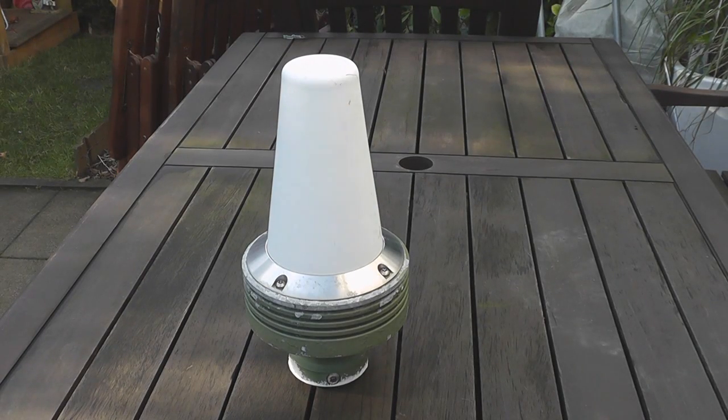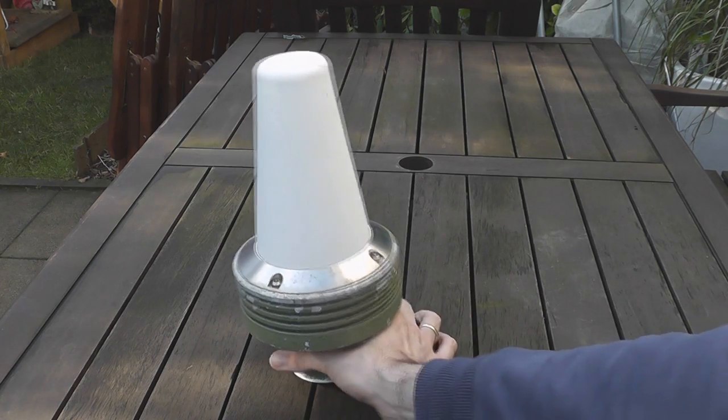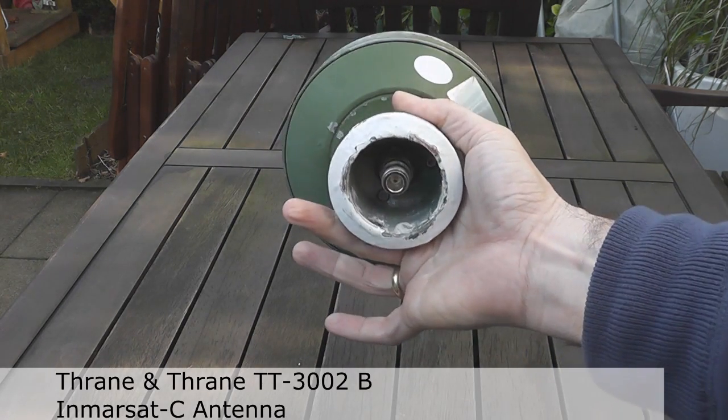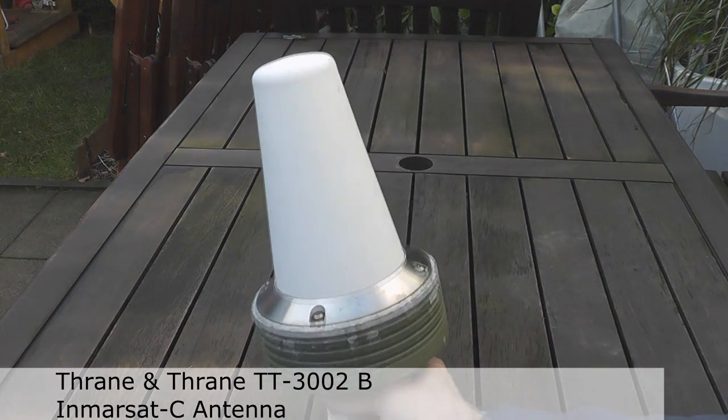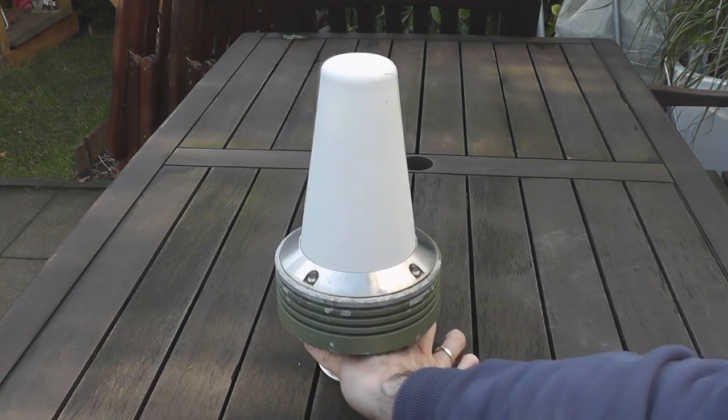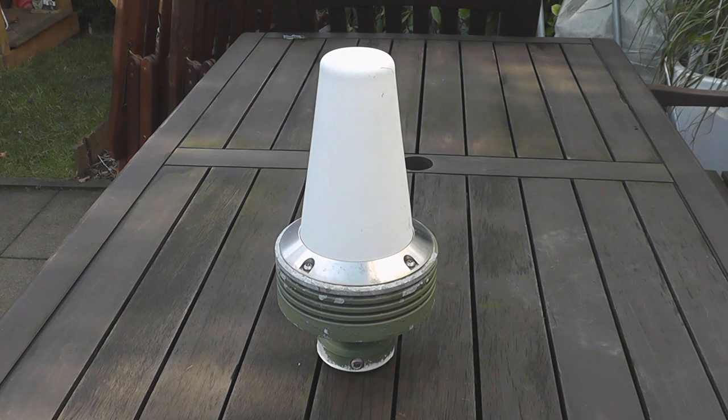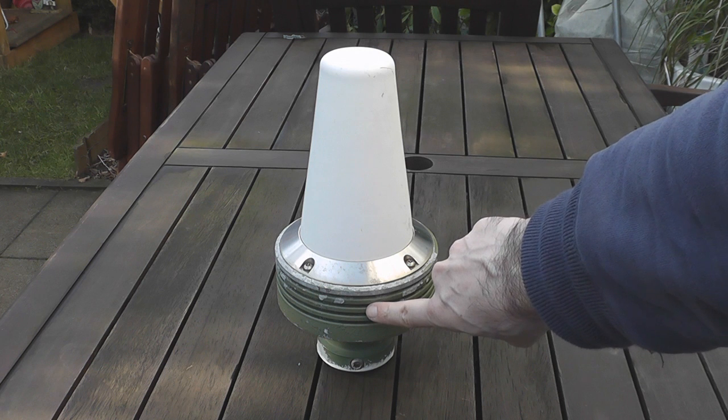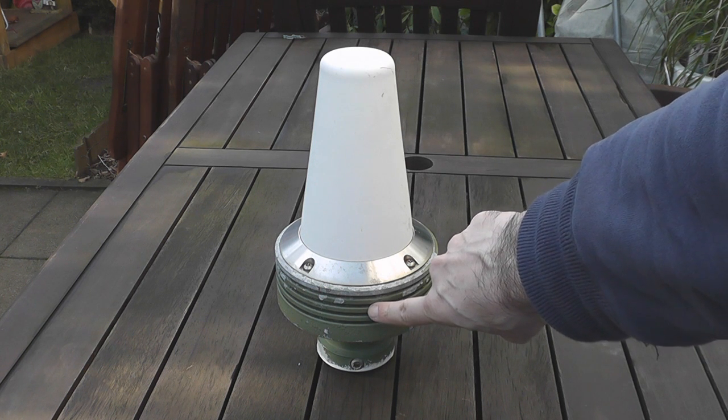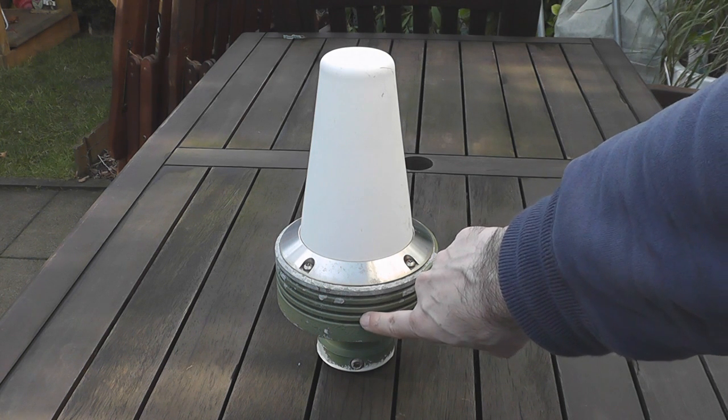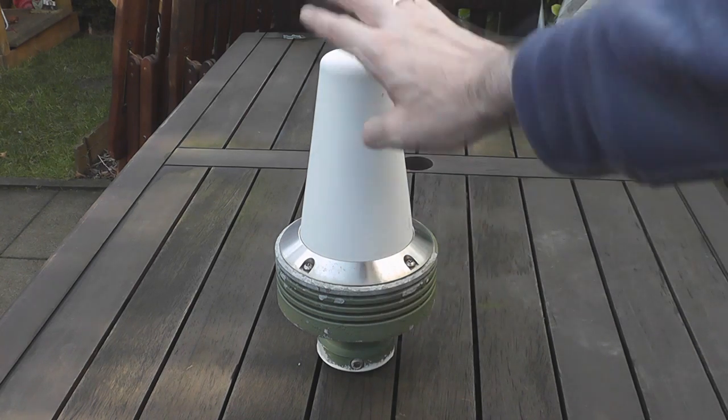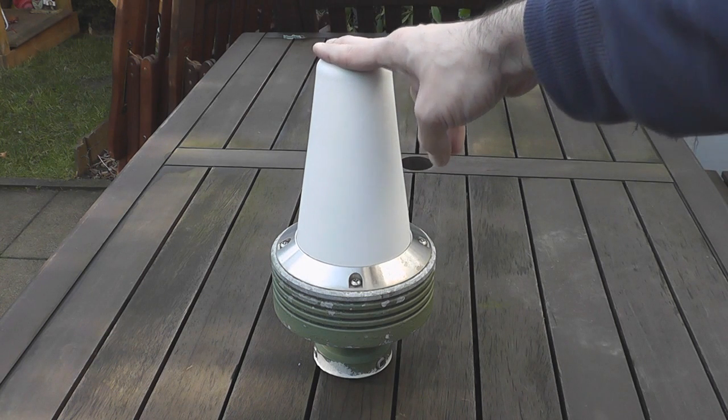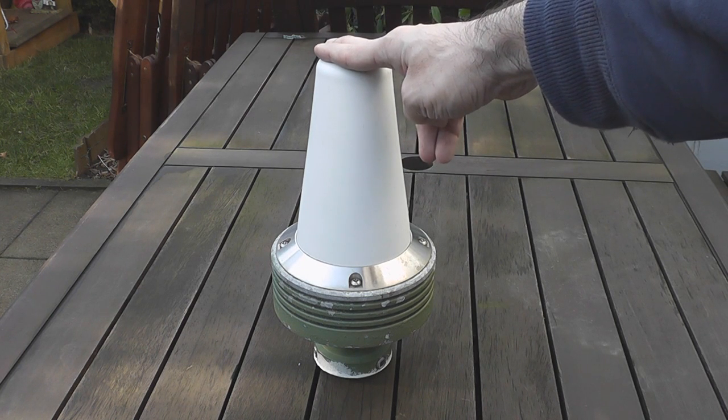The first one is this Inmarsat C pot antenna. It comes with an N connector on the bottom and is usually mounted on the top of a mast on a ship. This green compartment here contains all the electronics. That's the reception pre-amplifier and the uplink power amplifier and some diplexers and filters. And under this radome there is a bifilar helix antenna.